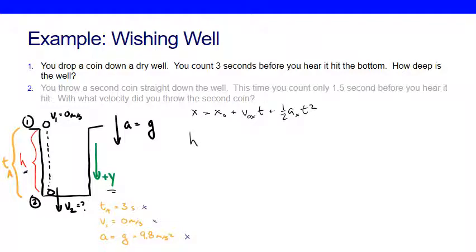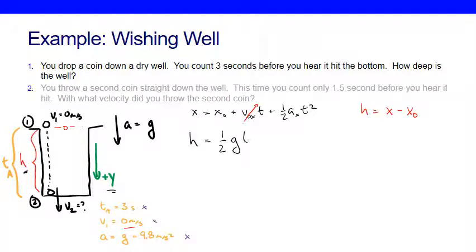When I plug in my variables, I get H equals — and I'll plug in zero for my initial velocity, so that term goes away. H is my displacement (X minus X₀), my initial velocity is zero so that disappears, and what I'm left with is one-half times G times T_A squared. That is my answer — the height of this well in terms of all known quantities.